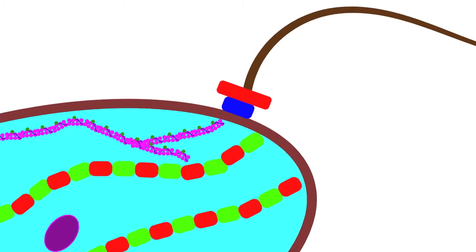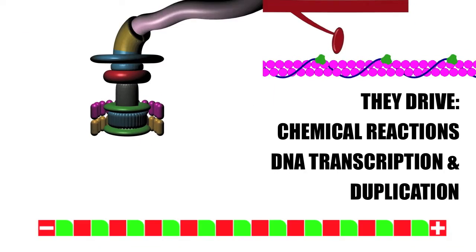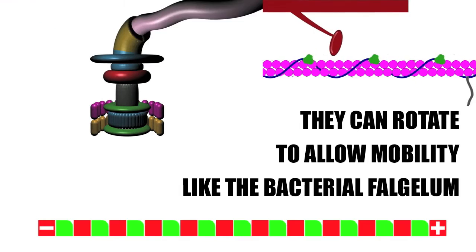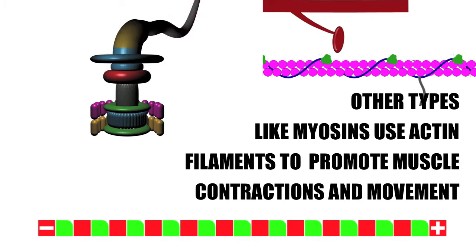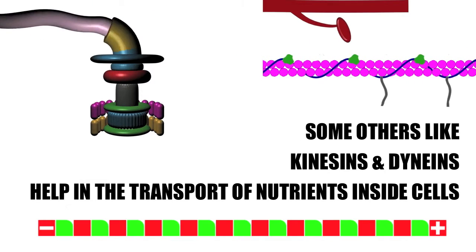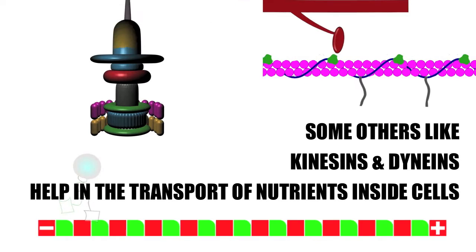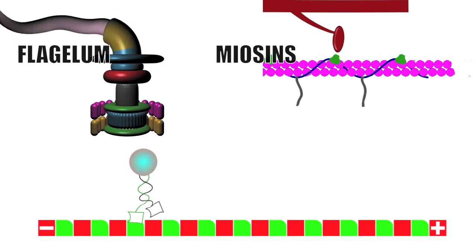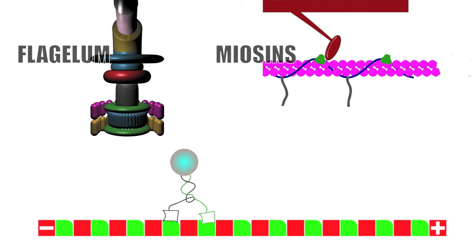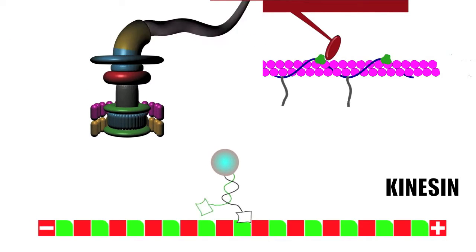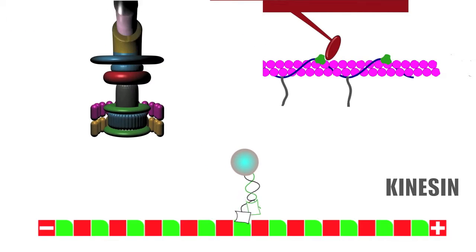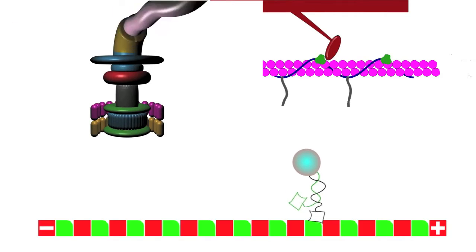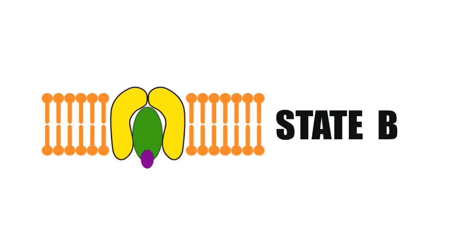Inside our cells, there are tiny machines that allow our bodies to work. These machines are called molecular motors. They are basically enzyme complexes that can perform mechanical work. Their ability to perform such tasks relies on a natural skill to exist in multiple stable conformations.